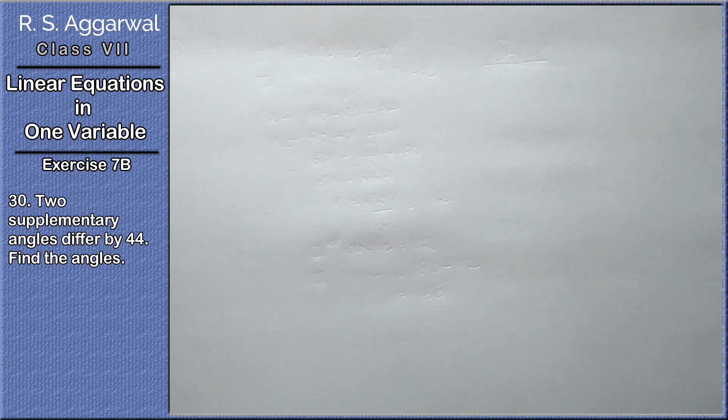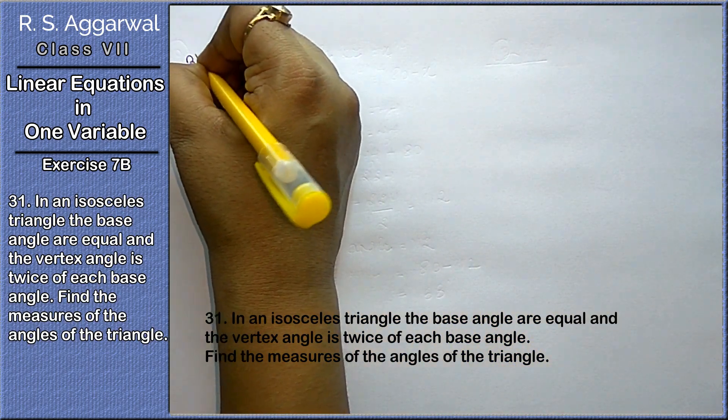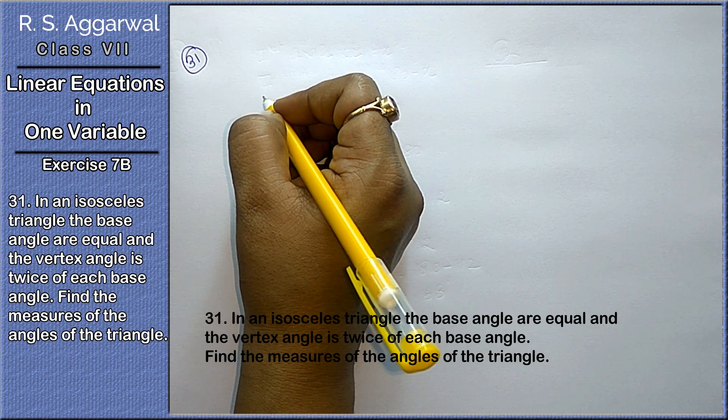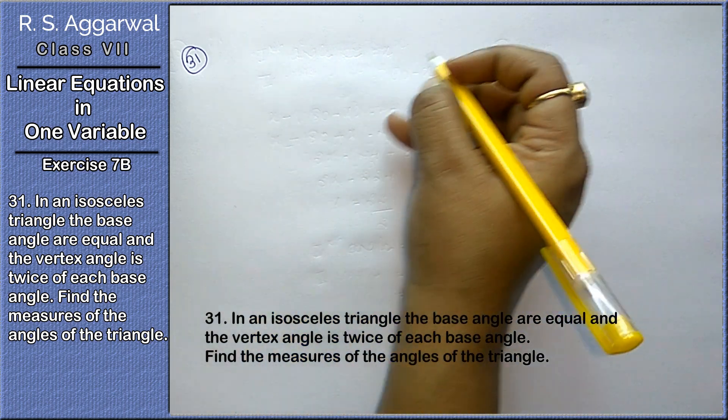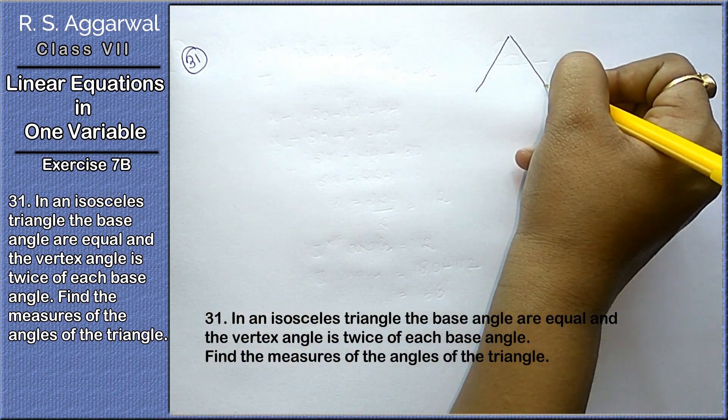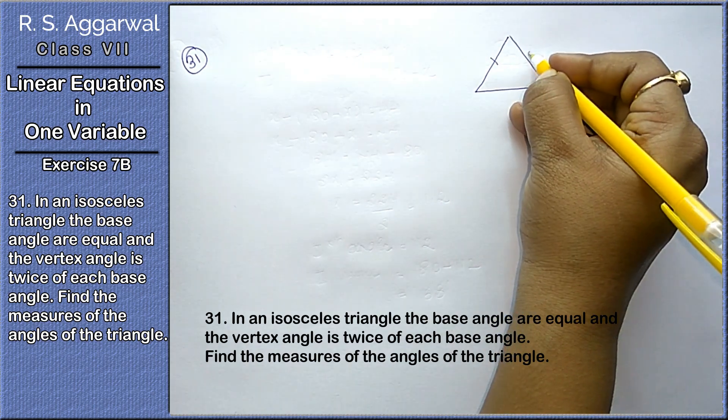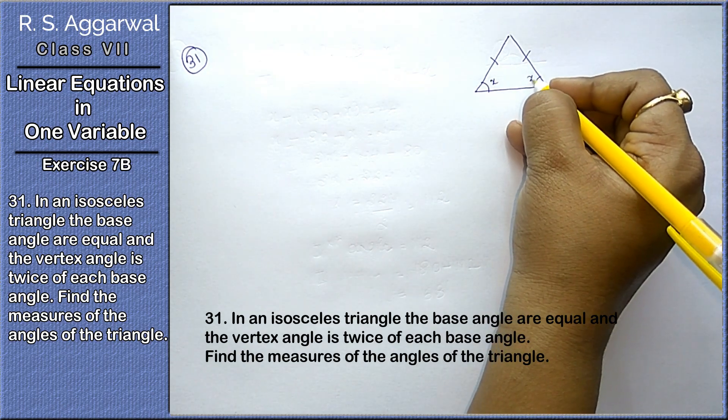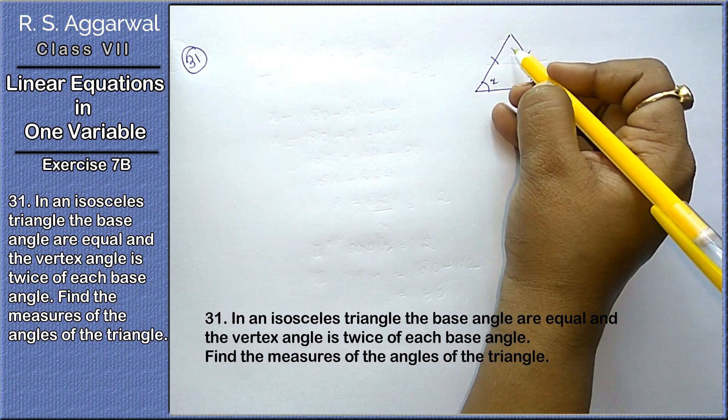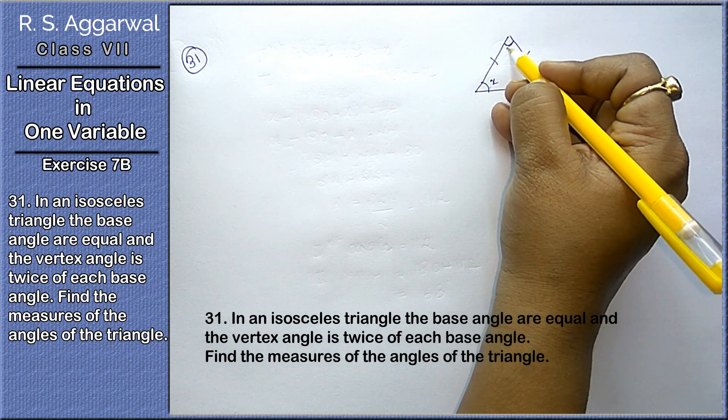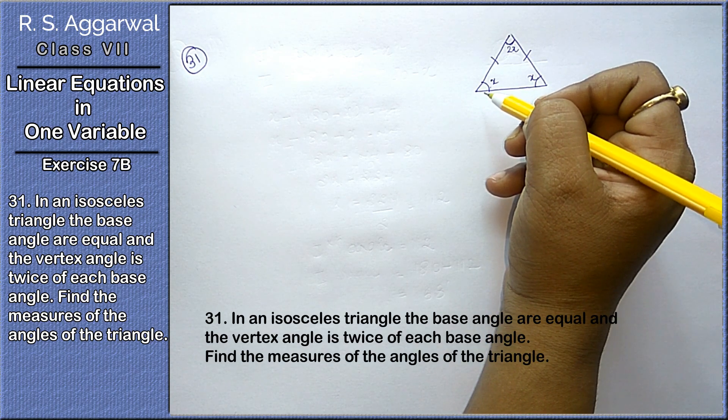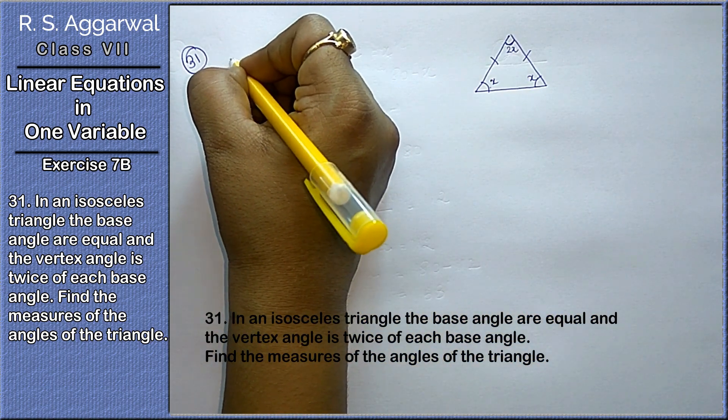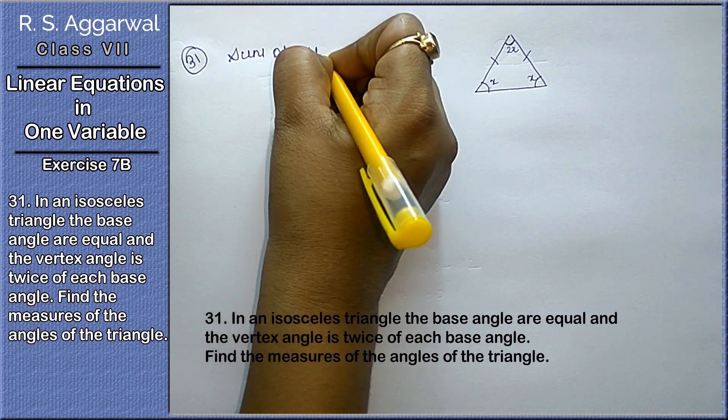Let's do the last question, that is 31st question. In an isosceles triangle, the base angles are equal and the vertex angle is twice the base angle. Find the measure of all the angles of the triangle.